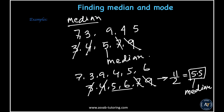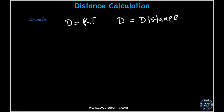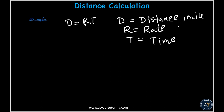Next we'll learn how to calculate distance. The formula is d equals r times t, where d is distance, r is rate, and t is time. The units are typically miles for distance, miles per hour for rate, and hours for time. You can rearrange: rate equals distance over time, or time equals distance over rate.